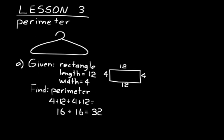When we're doing perimeter, we're always measuring a length, so it's a good idea to include units. Let's say we're using inches — our length is 12 inches, our width is 4 inches, so the perimeter equals 32 inches. Always remember on a perimeter problem, whenever you have a measurement, you always need to include the units. It's basically half of your answer.